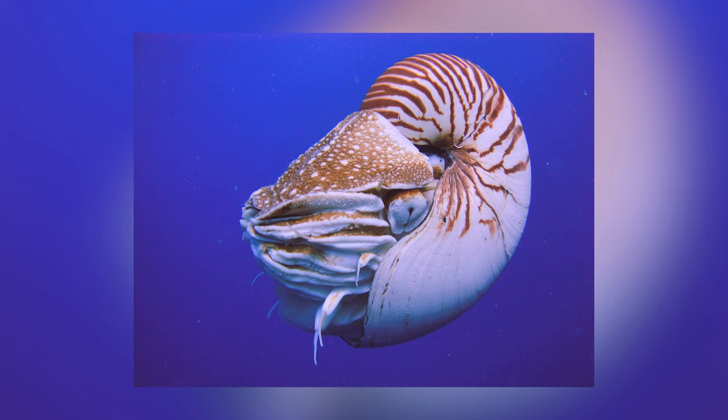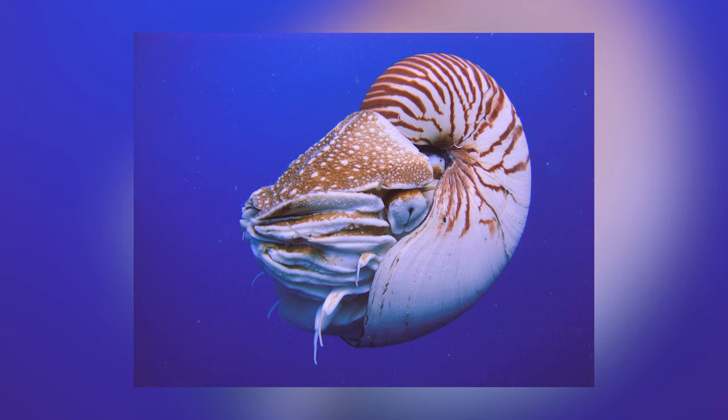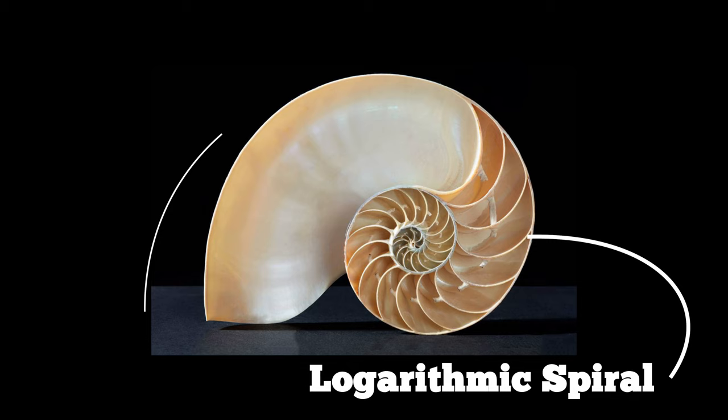The marine mollusk Nautilus belauensis, commonly known as the Nautilus, is said to follow the golden ratio and you can see this if you cut the shell in half. However, this is actually a logarithmic spiral, which means it turns by a constant angle along its length — this is not the golden ratio, even though it might look quite similar. And this is the main problem: we as humans want to find order in chaos, we want to find patterns even when there aren't any, and 'close enough' seems to be the norm for the golden spiral.